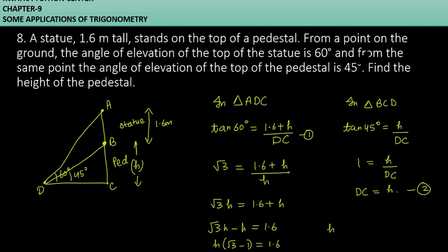You will get H equals 1.6 over root 3 minus 1. We have to solve this using rationalization. We have to multiply and divide by root 3 plus 1.